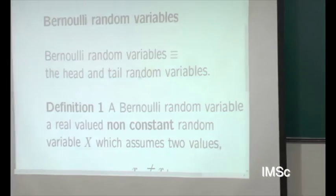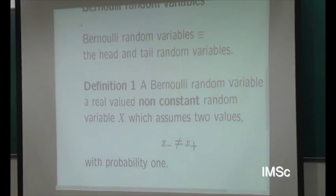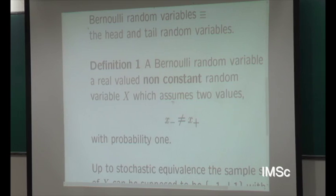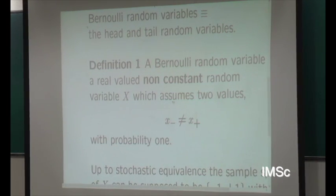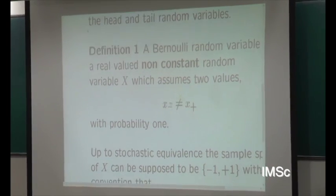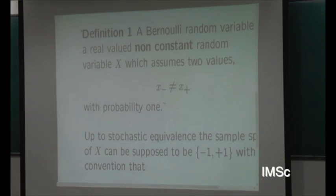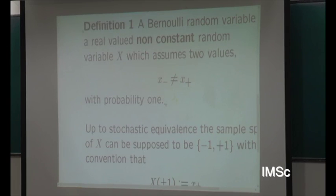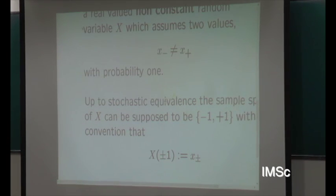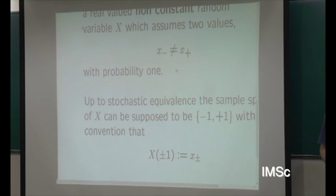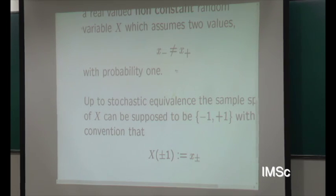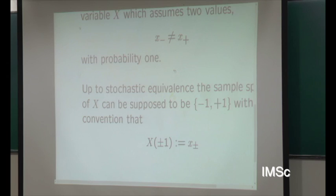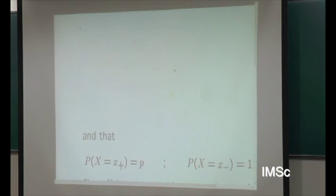What we want to do, first of all, is define what is a Bernoulli random variable. A Bernoulli random variable is the simplest possible random variable. It is a real-valued random variable with two values. We suppose it is not constant, so with probability one they are different. We call these values X minus and X plus. In economics, X minus represents a loss and X plus a gain — this is the typical Bernoulli risk scheme, which is a universal object for probability.